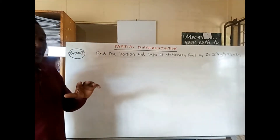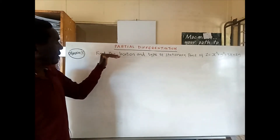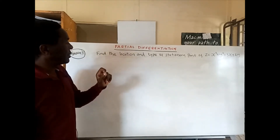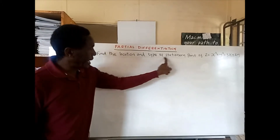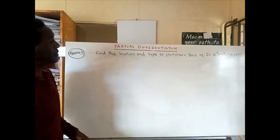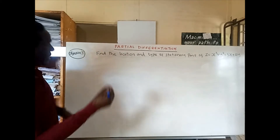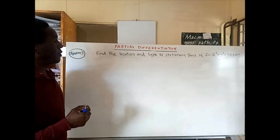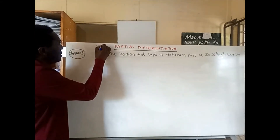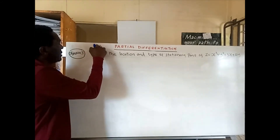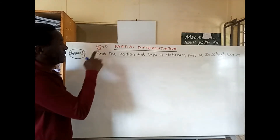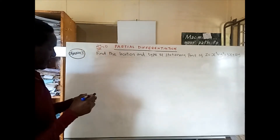There are two things that are going to combine in this question: we are first getting the location, and then getting the type of that stationary point. To get the location, we need to remember from ordinary differentiation that the gradient function dy over dx at a turning point is equal to zero. We're going to apply the same knowledge here.